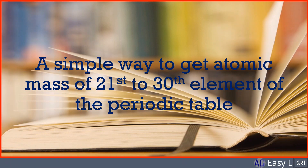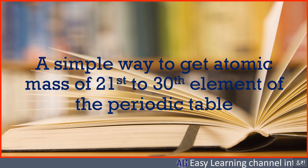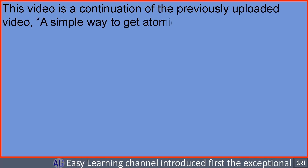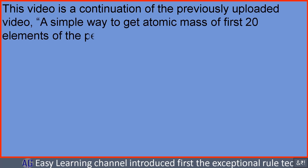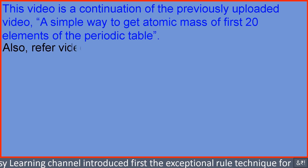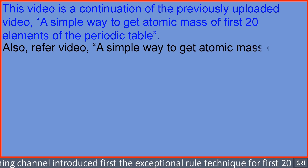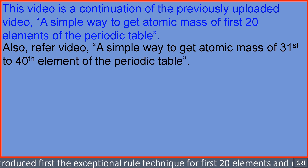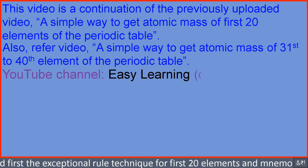A simple way to get atomic mass of the 21st to 30th elements of the periodic table. This video is a continuation of the previously uploaded video on a simple way to get atomic mass of the first 20 elements of the periodic table. Also refer to the video on a simple way to get atomic mass of the 31st to 40th elements of the periodic table, on YouTube channel Easy Learning.